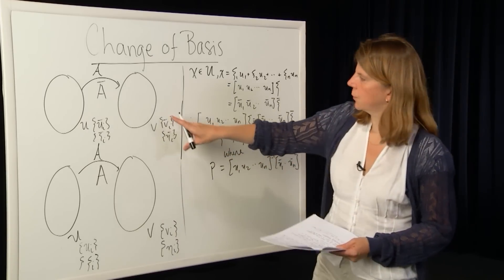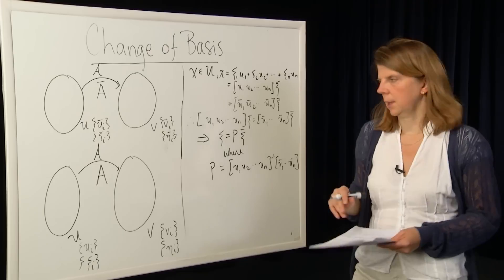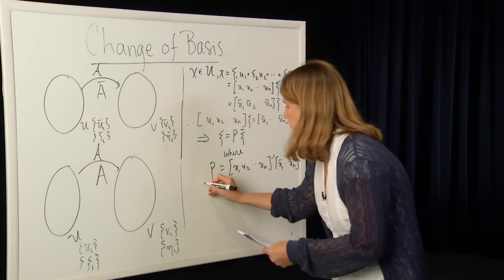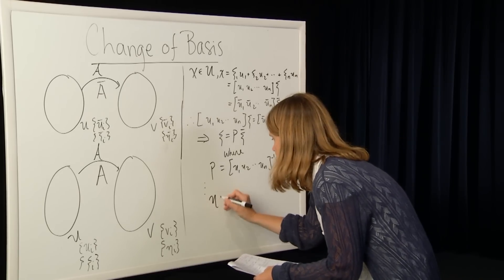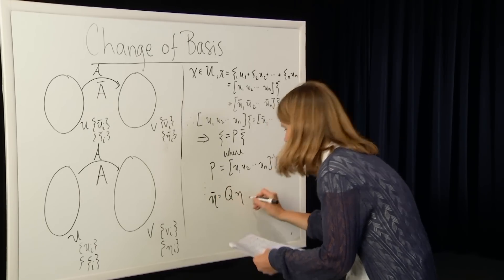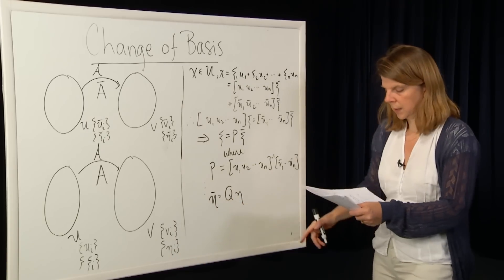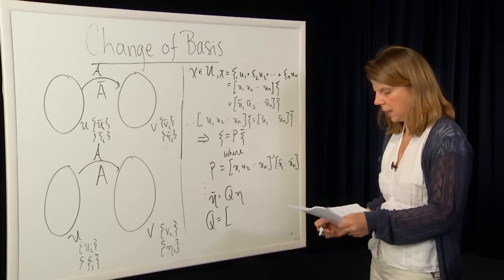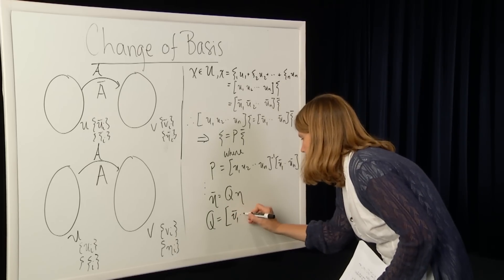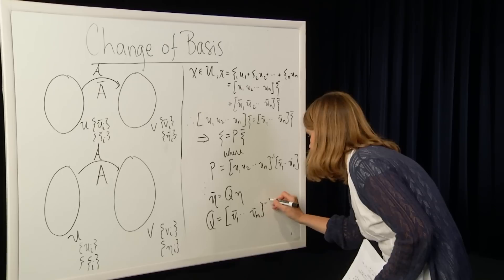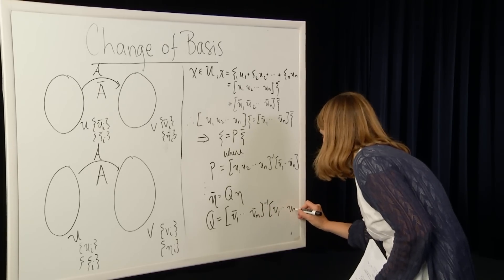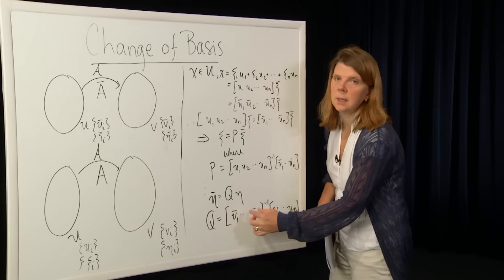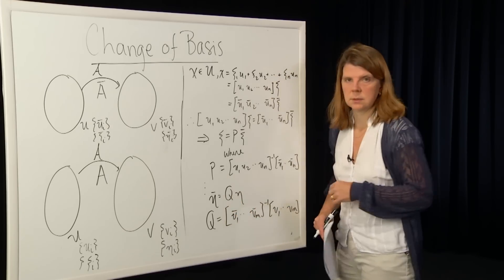We can do the same thing for a vector over in our codomain — write it in terms of two different bases and the corresponding coordinate vectors. We derive a representation of eta bar with respect to the coordinates eta, calling that matrix Q. Q equals the matrix [V1 bar ... Vm bar] inverse times [V1 ... Vm]. Again, these are vectors in Rm; they're linearly independent, so this matrix is invertible.